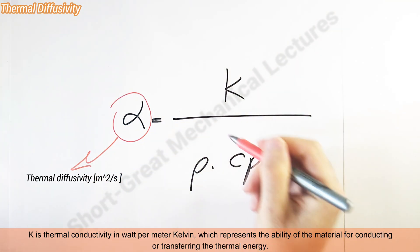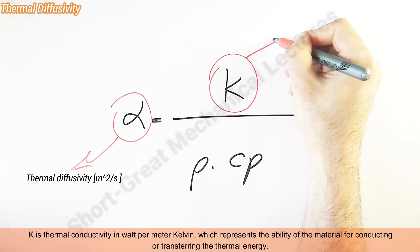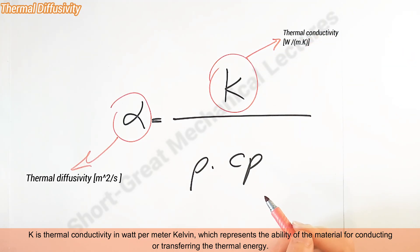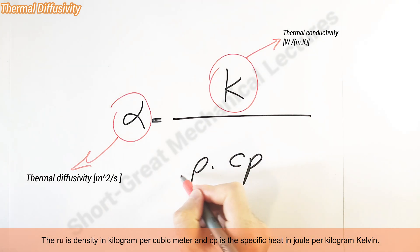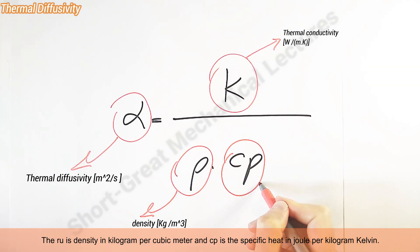K is thermal conductivity in watts per meter kelvin, which represents the ability of the material for conducting or transferring thermal energy. Rho is density in kilograms per cubic meter, and cp is the specific heat in joules per kilogram kelvin.